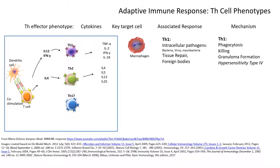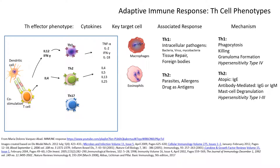Note that the cytokines produced by different T cell phenotypes do not overlap — they are very characteristic and distinct. TH2 cytokines stimulate eosinophils. The TH2 response is the body's way of dealing with parasites, allergens, and drugs as antigens. The typical mechanism is atopic, mediated by IgE production, or antibody-mediated via IgG or IgM. It can also cause mast cell degranulation and is responsible for hypersensitivity types 1, 2, and 3.